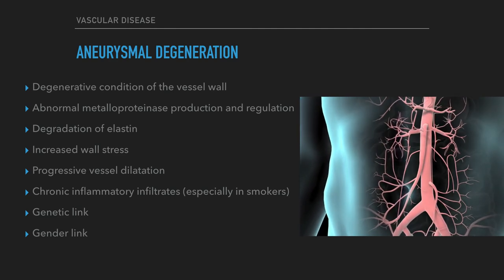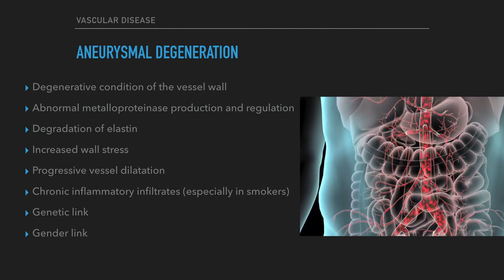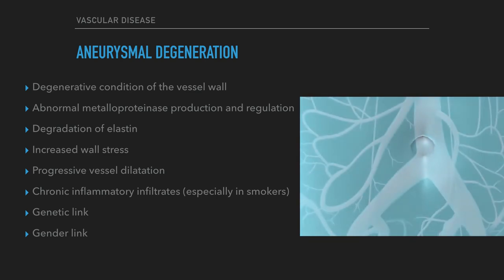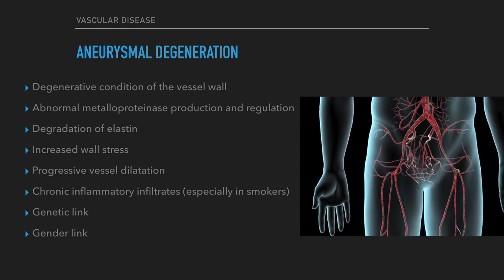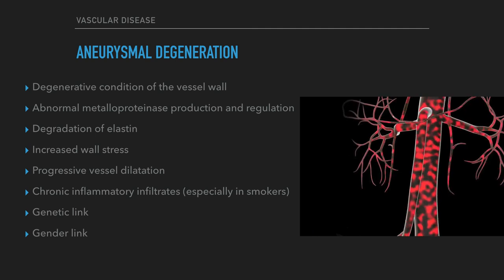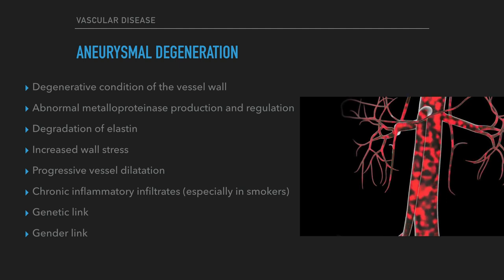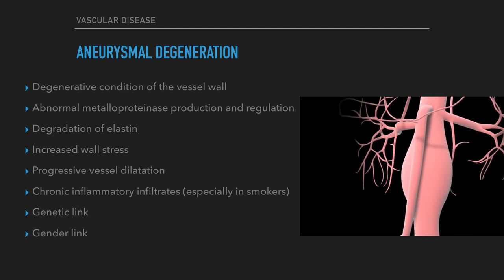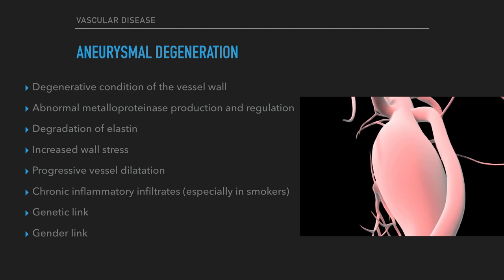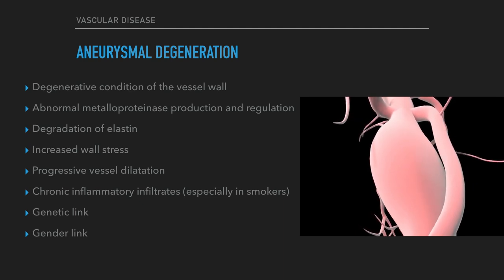Aneurysmal degeneration is a degenerative condition of the vessel wall, perhaps due to abnormal metalloproteinase production and regulation. MMPs — especially MMP2 and MMP9 — are thought to have enzymatic properties that degrade elastin, which in combination with years of increased wall stress leads to progressive vessel dilatation. Chronic inflammatory infiltrates, especially in smokers, including T-cells, B-cells, macrophages, and plasma cells, also occur and secrete cytokines that may activate MMPs. Although there appears to be an inflammatory aspect, there is also a genetic and gender link that is poorly understood, with a notably higher familial incidence especially among first-degree male relatives.